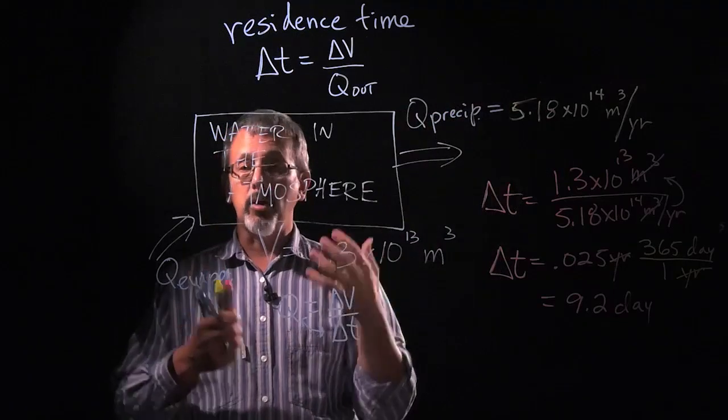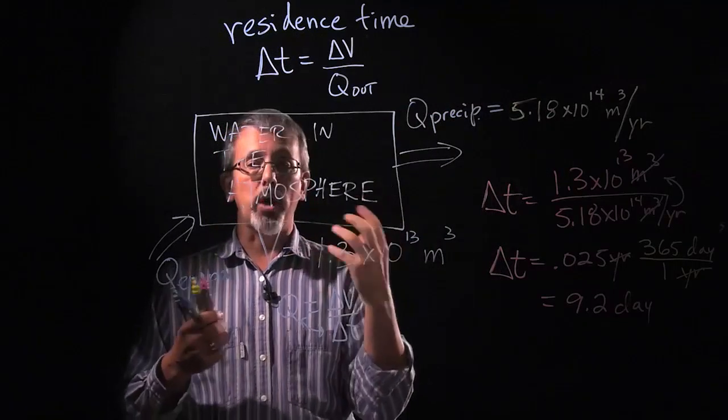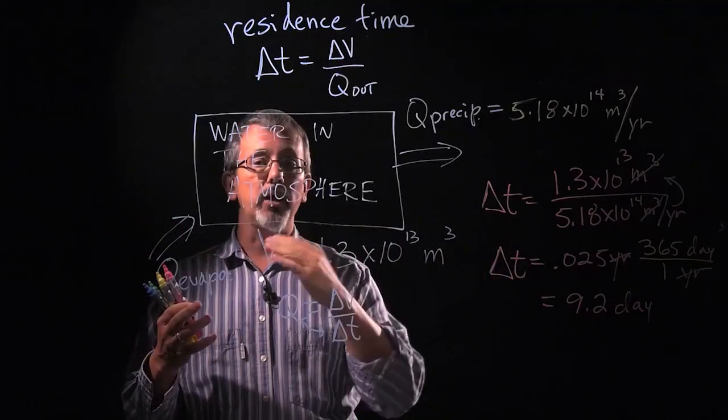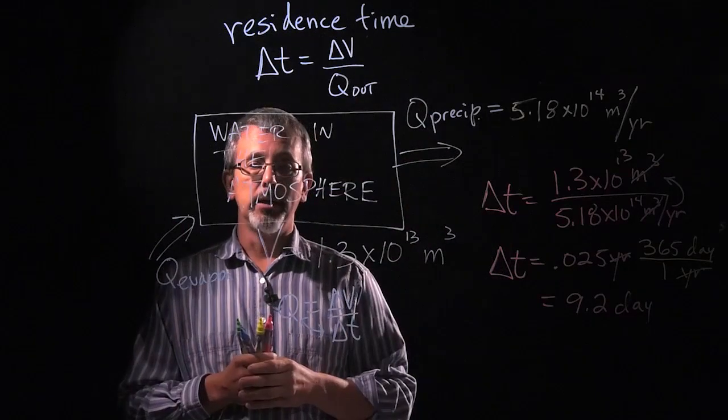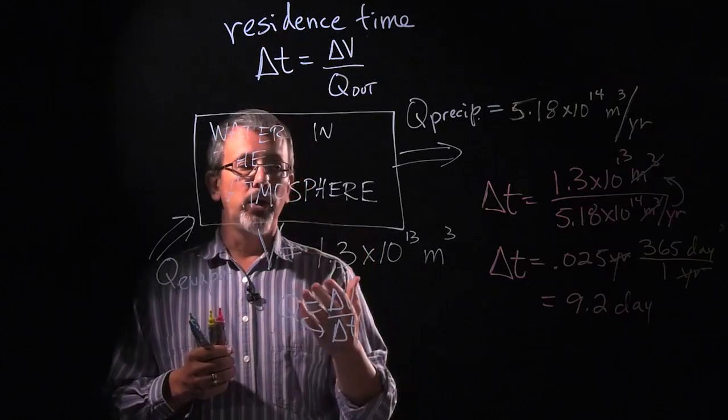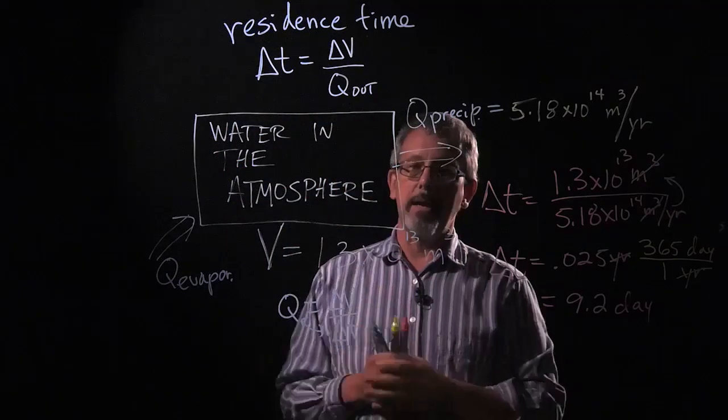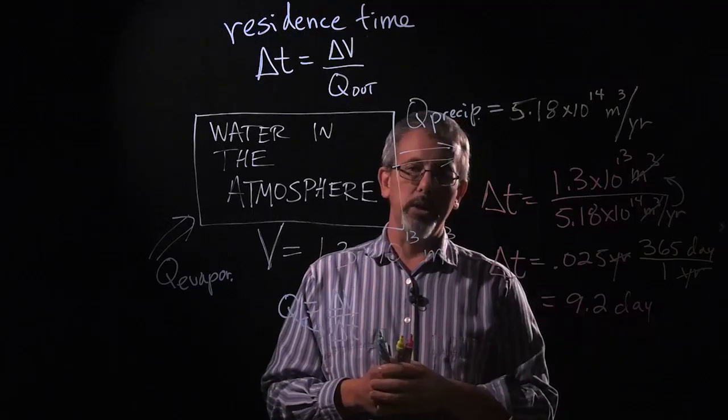Now, that's not true of everything. There are some water molecules or water droplets that could stay up there for extended periods of time. And there are some that could evaporate and almost immediately condense and precipitate again. But in general, the average amount of time spent in the atmosphere is about 9.2 days.